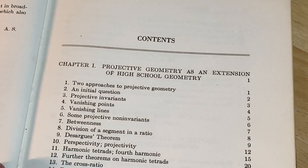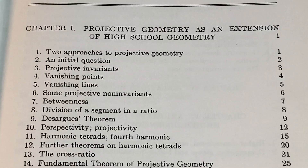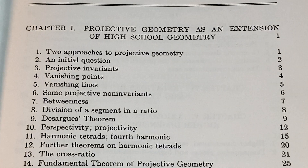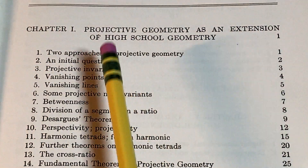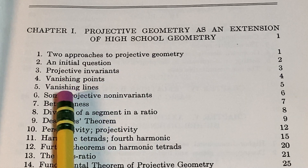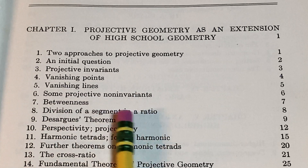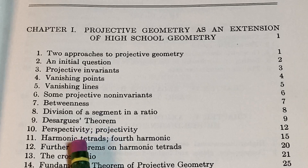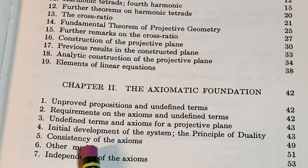And here is a look at the contents. We have projective geometry as an extension of high school geometry, and then lots of little subtopics. We've got two approaches to projective geometry and an initial question, projective invariance, vanishing points, vanishing lines, some projective non-invariance between division of a segment and a ratio. And then the axiomatic foundation, with some interesting topics there as well.